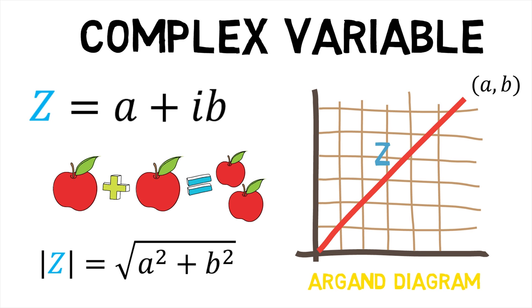There are three major functions of a complex variable, namely holomorphic function, analytic function and Cauchy-Riemann equations. First, let's look at the definition of holomorphic function.